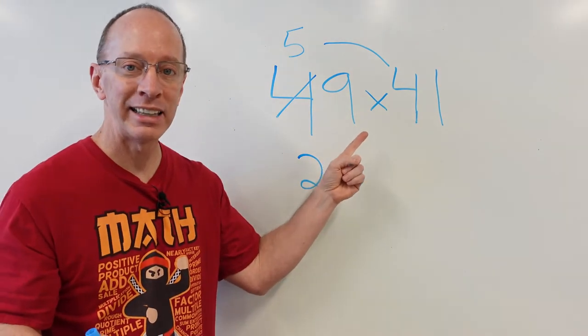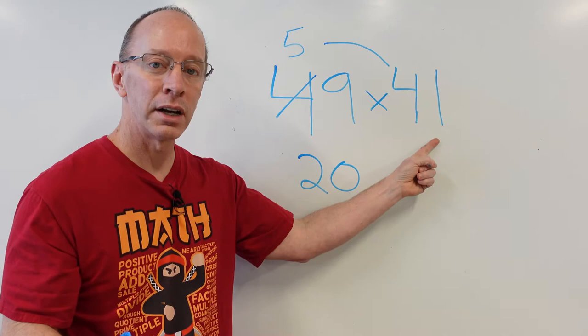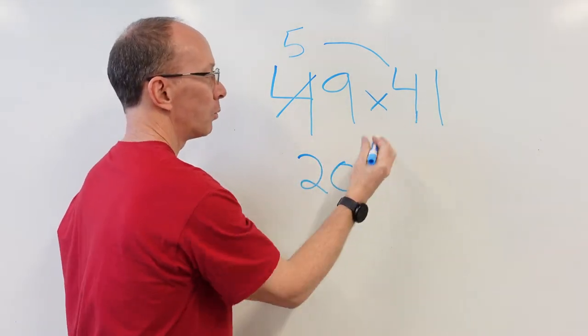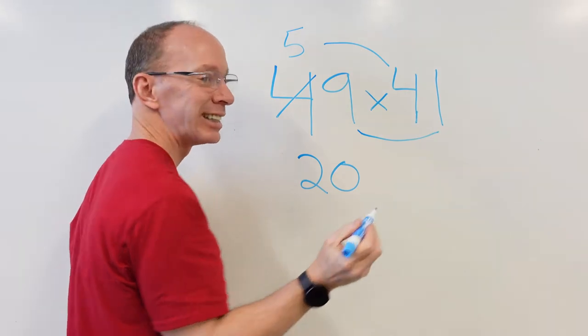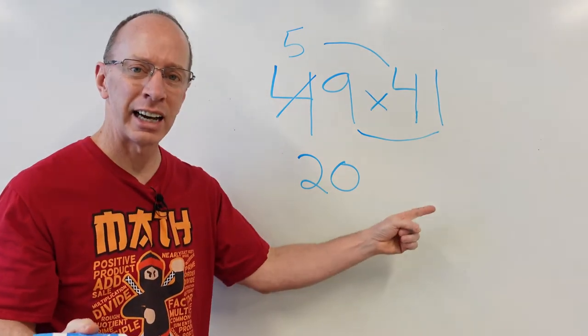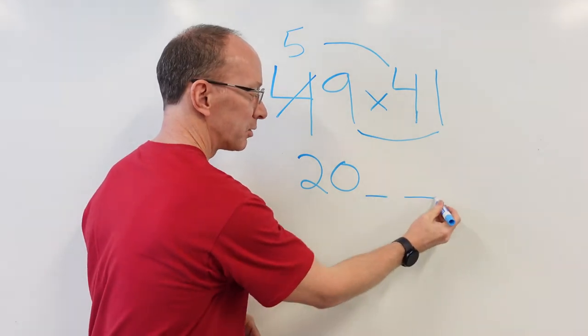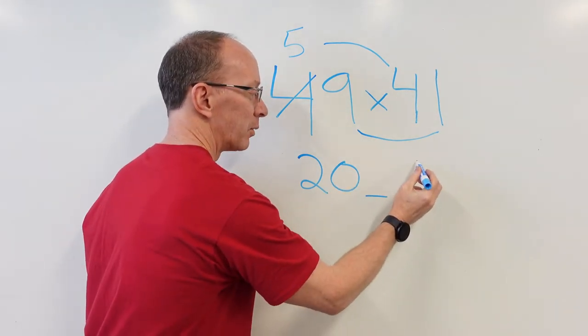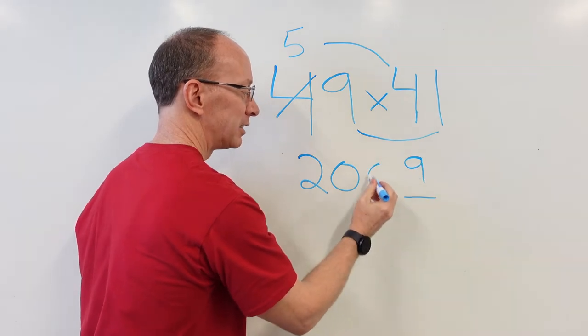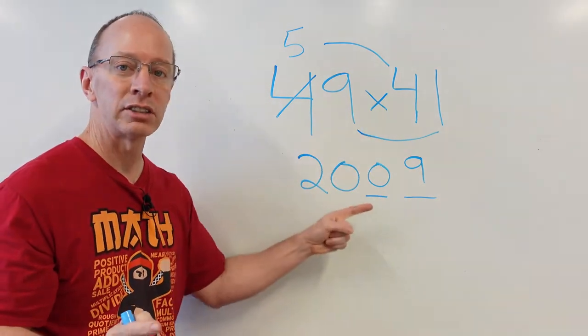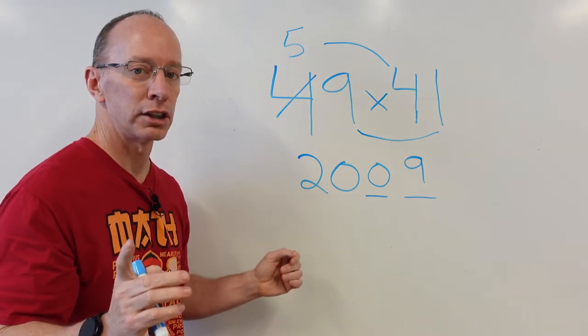Now, I multiply the nine times the one. Ready to do it? Yeah! Let's do it. Nine times one. That would be nine. You want to put a zero nine because it's in a tens place. So, you got these spaces right here to fill up. So, you want to put the nine where it goes in the ones place and a zero here. So, forty-nine times forty-one equals two thousand nine. Ready to do another one? Yeah! Let's do it.